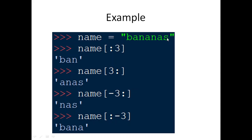If you give name[:-3], it prints from the beginning up to but excluding the -3 position, so 'bina' is printed. In this way you can manipulate substrings using slicing.